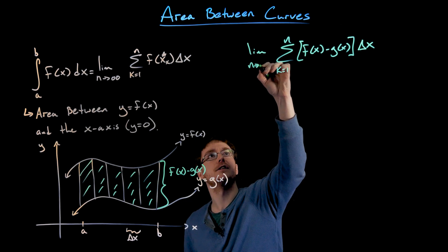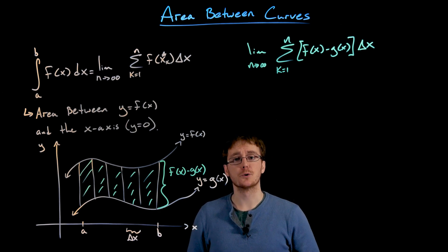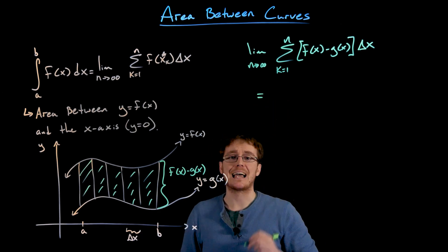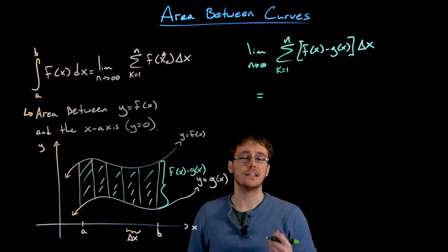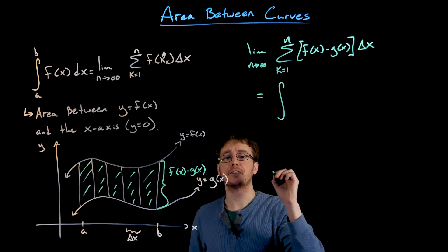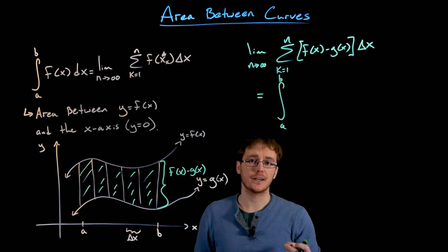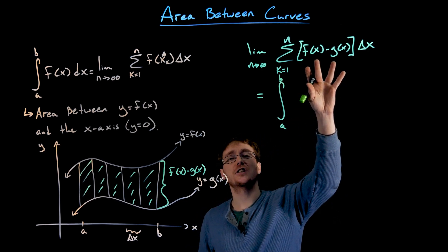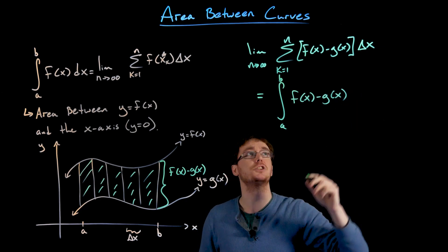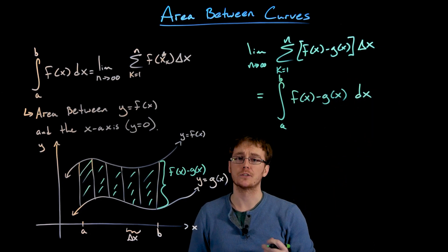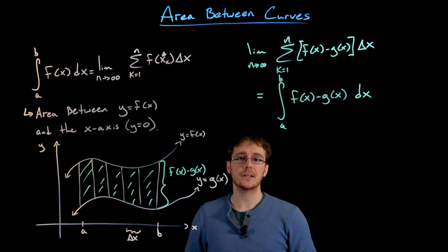If we take the limit as n approaches infinity of our Riemann sum — meaning we're using more and more subintervals that are getting thinner and thinner — that improves our approximation and gives us the exact area between our two curves. And we already know what happens when we take the limit of a Riemann sum: it turns into a definite integral. So our definite integral is over our interval from a to b, and the function we integrate is the difference between our two functions, f of x minus g of x, and our delta x turns into the differential dx.